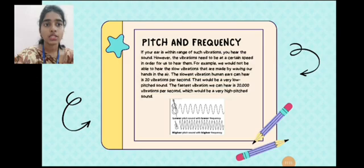20 vibrations per second is the slowest vibration that the human ear can reach. And the fastest vibration we can hear, that the human ear hears, is 20,000 vibrations per second, which would be a very high pitched sound.